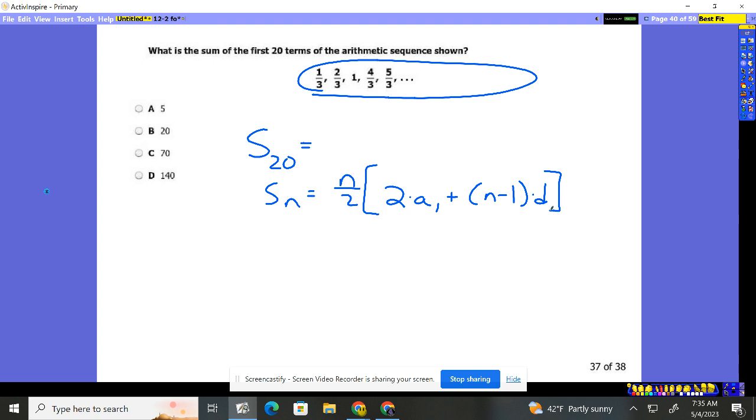We're going to find out. So n is 20. So it's going to be 20. So this is going to be S sub 20. The sum of the first 20 digits is 20 divided by two.